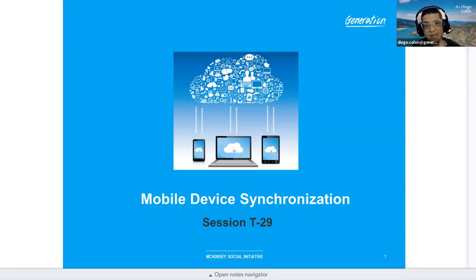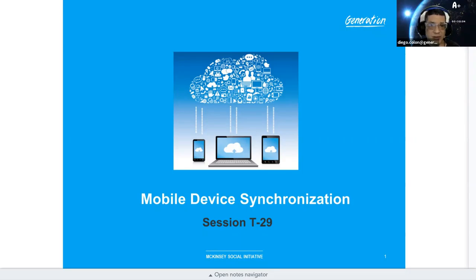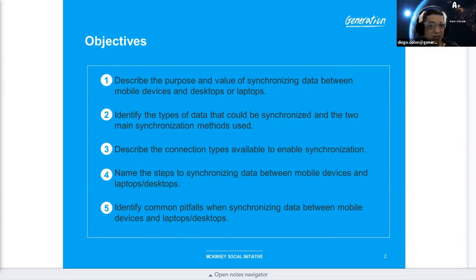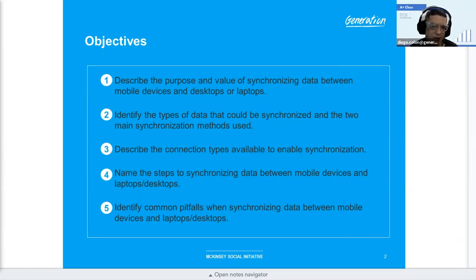Nowadays, there are many types of information being synced, applications that can be installed to perform synchronization, and a number of connection methods being used. We're going to learn why and how to synchronize data between mobile devices in the corporate world. By the end of this session, our goal is to describe the purpose and value of synchronizing data between mobile devices, laptops, desktops, or the cloud. We'll identify types of data that can be synchronized, the two main synchronization methods, connection types, steps to synchronize data, and common pitfalls.